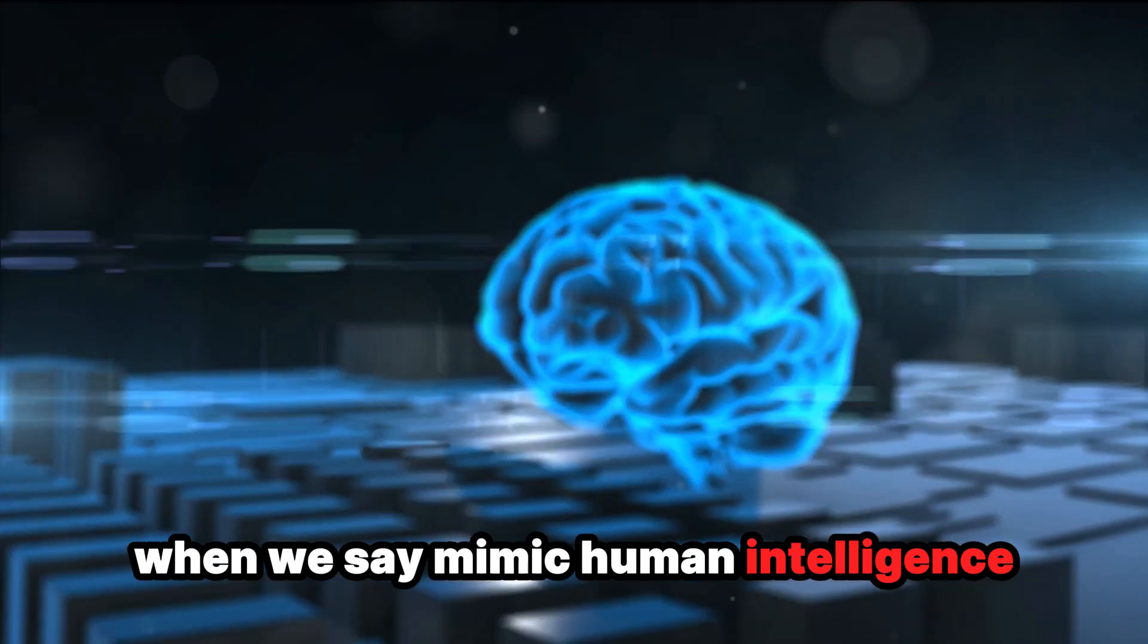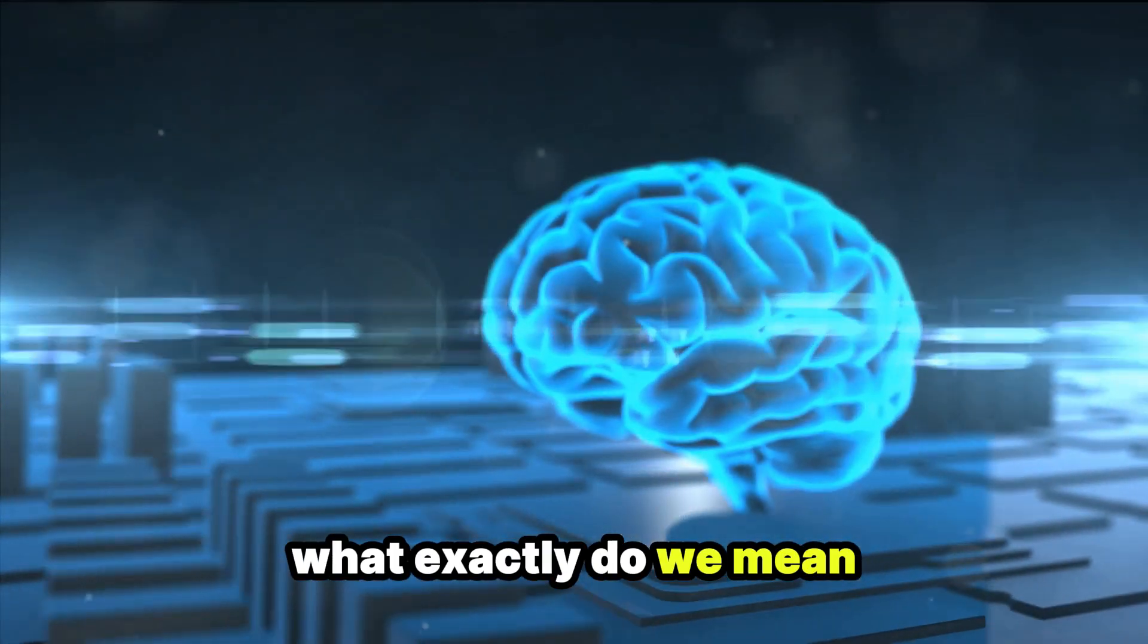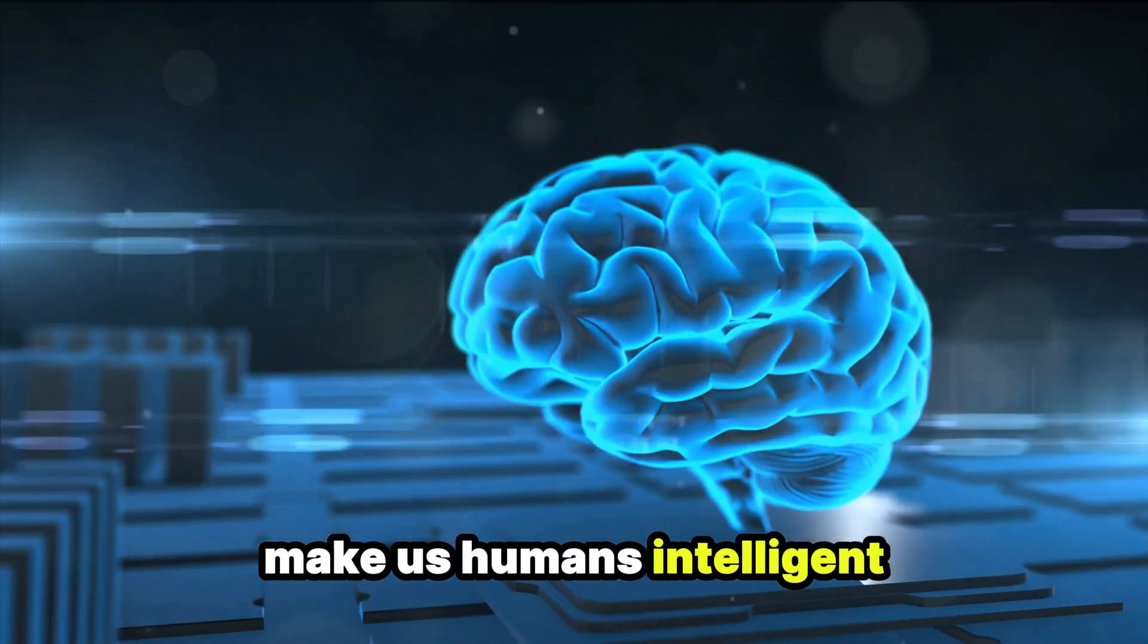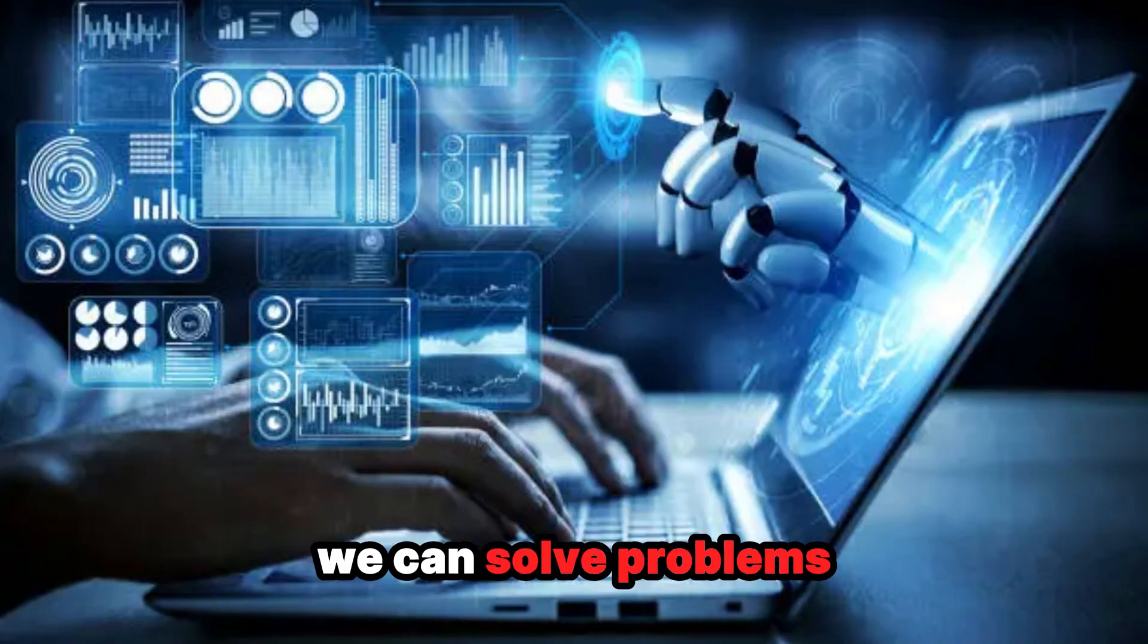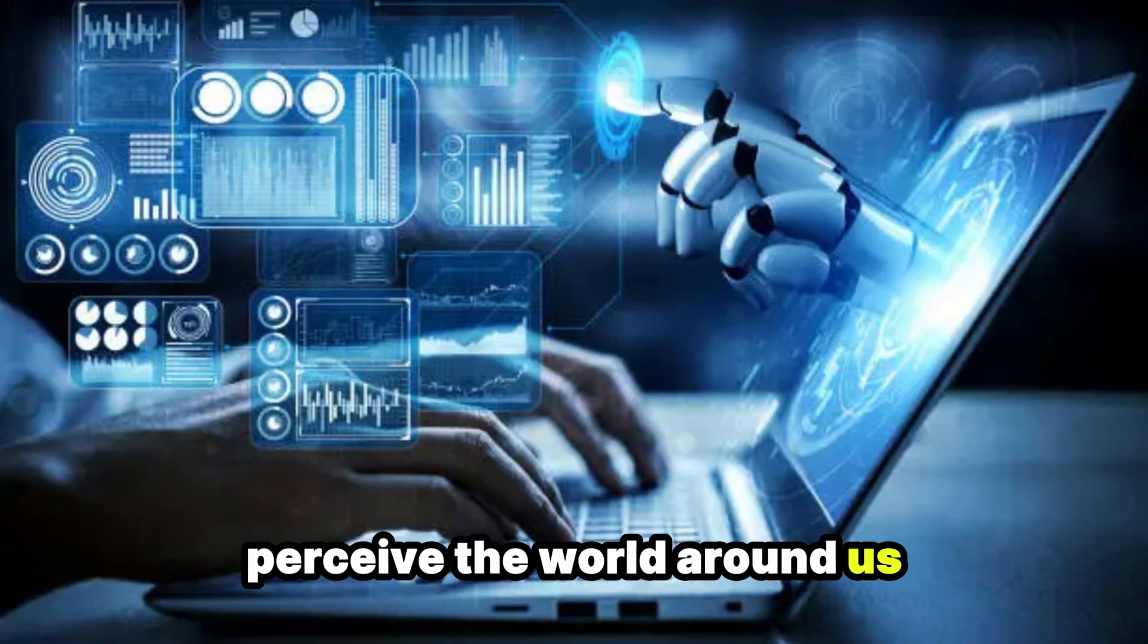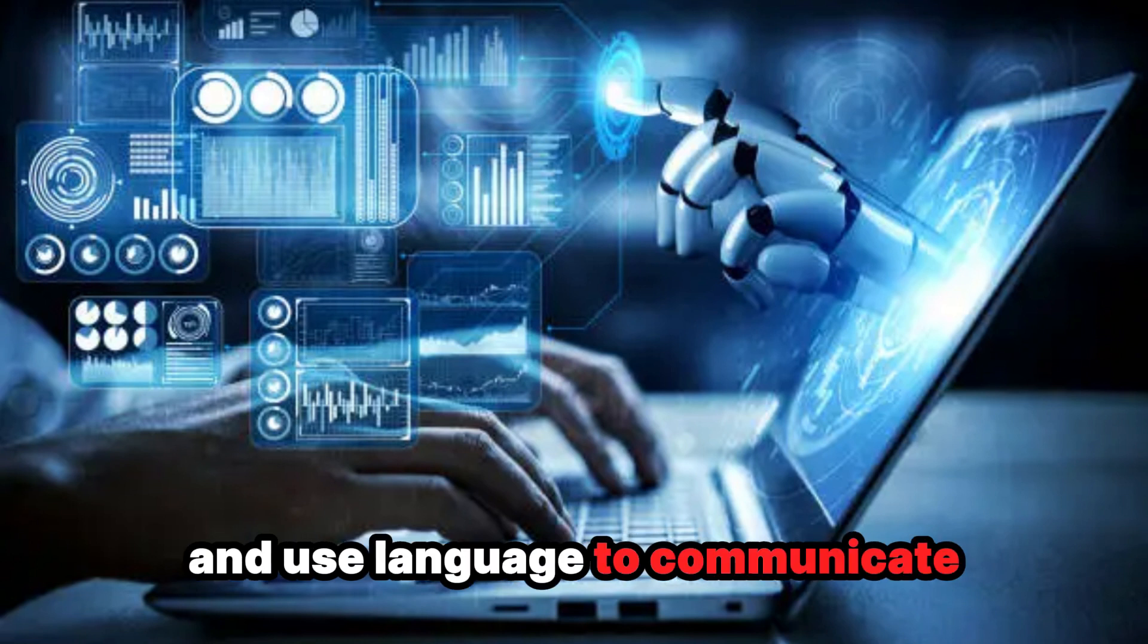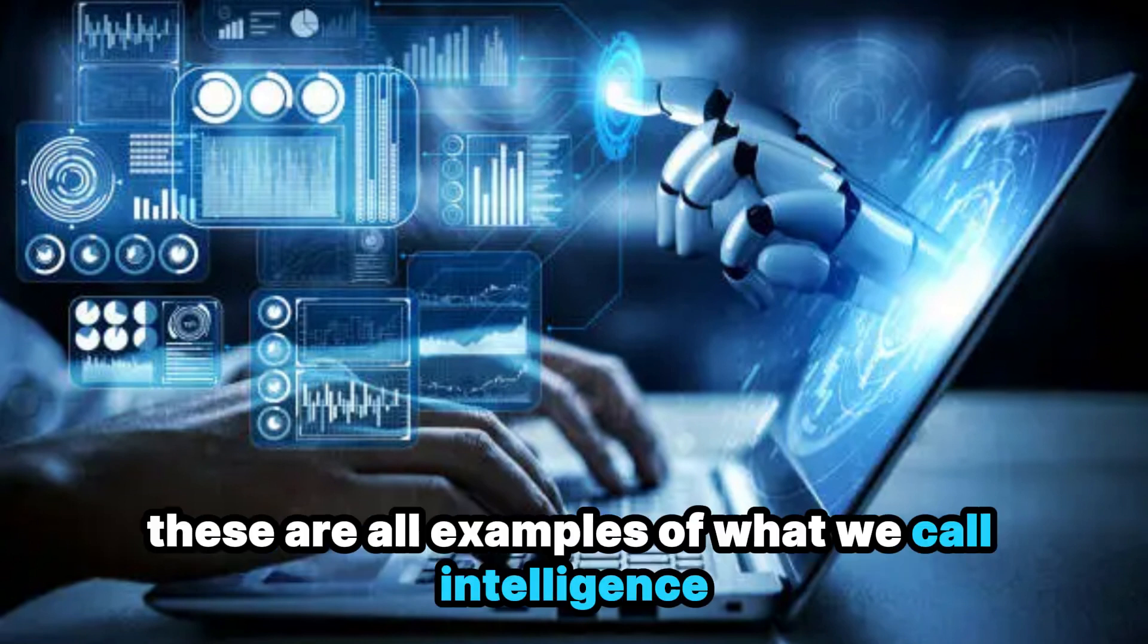It's an umbrella term that encompasses various technologies and methods with one common goal: to create systems that mimic human intelligence. Let's break that down. When we say mimic human intelligence, what exactly do we mean? Think of the things that make us humans intelligent. We can learn from our experiences, solve problems, perceive the world around us, and use language to communicate. These are all examples of what we call intelligence.